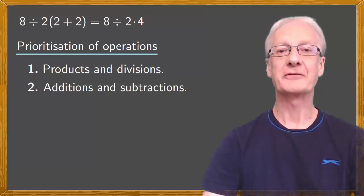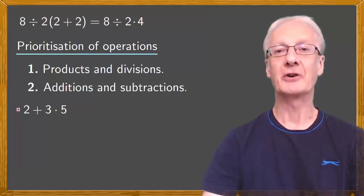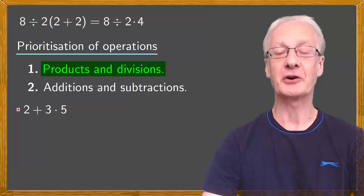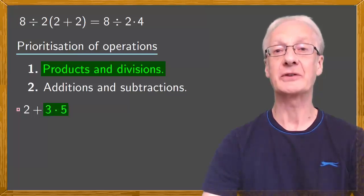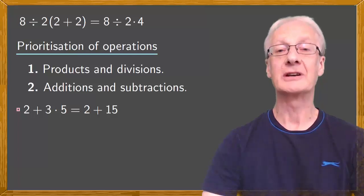For instance, if we have 2 plus 3 times 5, although going from left to right it might seem we should do the sum first, the priority rule of operations tells us first to do the product, 3 times 5, which is 15, and then add on the 2 to give the result 17.